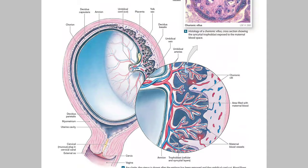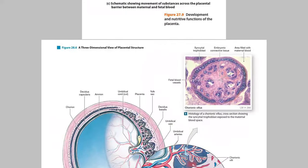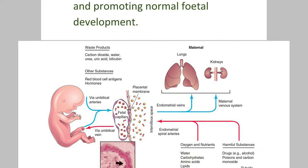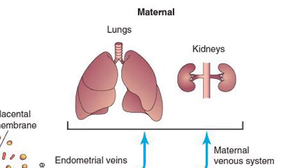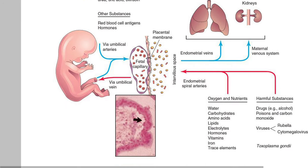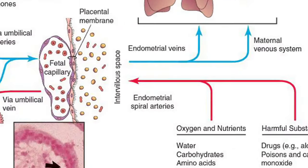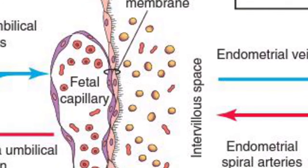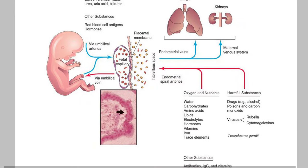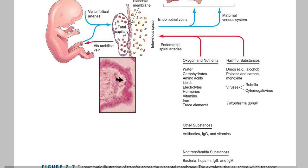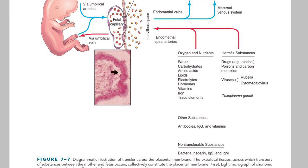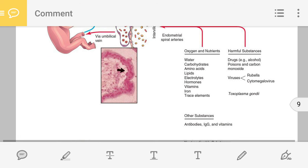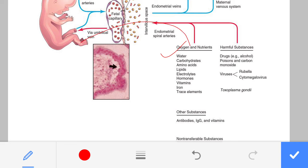This is a cross-section of the chorionic villi. On the right-hand side is the maternal circulation and on the left is the fetal circulation. Substances passing from maternal to fetal circulation include: oxygen, nutrients, water, carbohydrates (glucose, glycogen), amino acids, lipids (cholesterol, phospholipid), hormones, vitamins, iron, and trace elements.